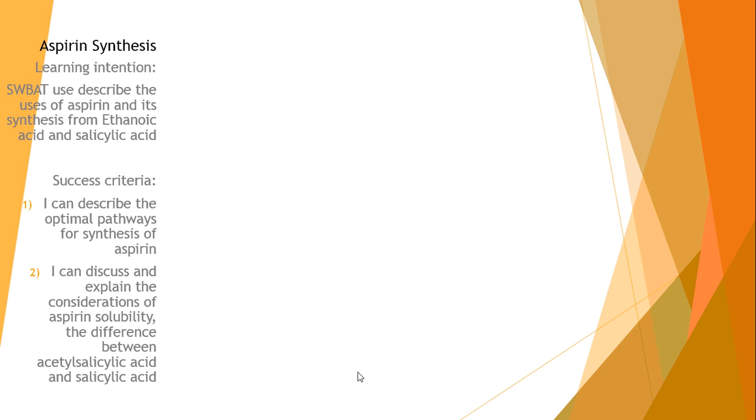So the learning intention for today is that students, you guys, will be able to describe the uses of aspirin and its synthesis from ethanoic acid and salicylic acid. It's not salicyclic acid, it's salicylic acid. So aspirin is made up of those two things, ethanoic acid and salicylic acid.